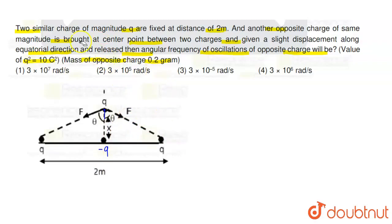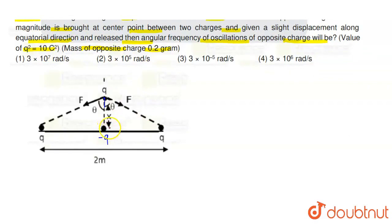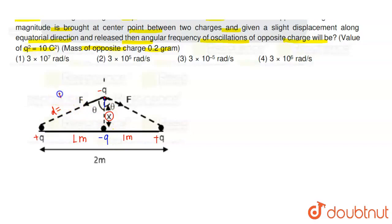पहले देखेंगे कि जब इस charge particle को x distance ले गए तो इस पे forces लगेंगे। यह positive charge था और यह negative charge है — इस पे attraction force होगा। यह distance d है। इस triangle में hypotenuse की value होगी: d = √(1 + x²), क्योंकि आधी distance 1 meter है। तो इस charge negative और positive charge की बीच में attraction force F होगा।